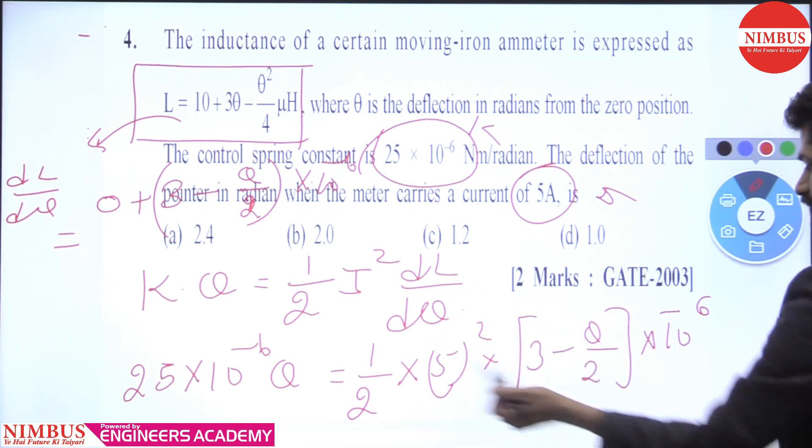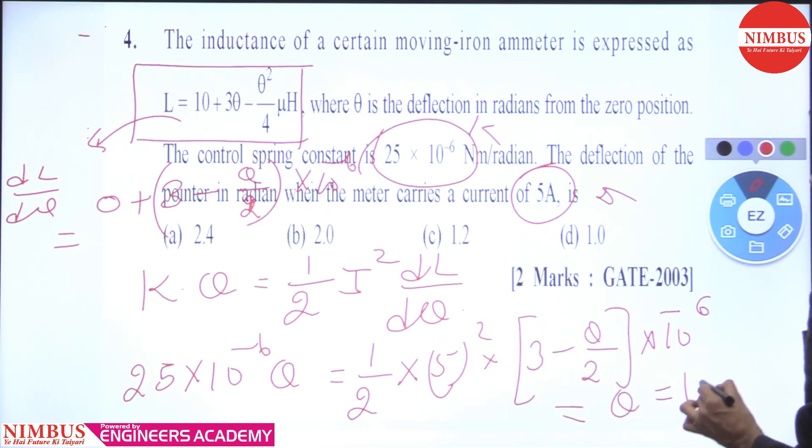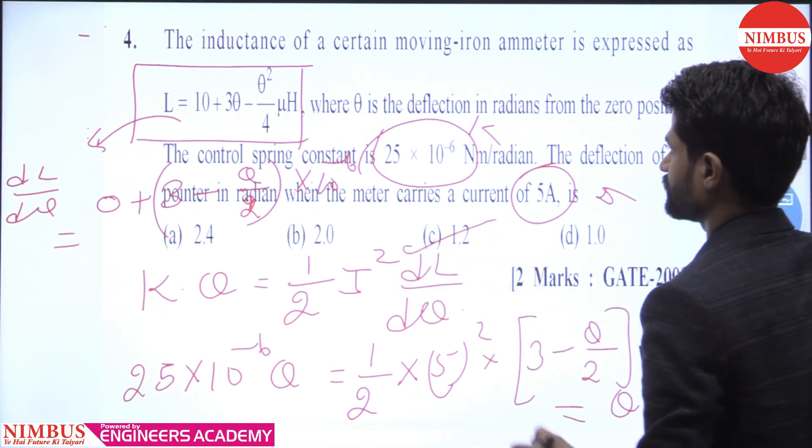When we solve this equation, theta equals 1.2 radians. Option C is the correct answer.